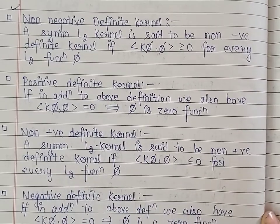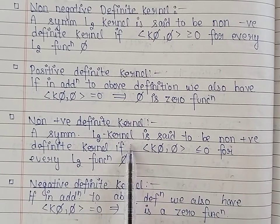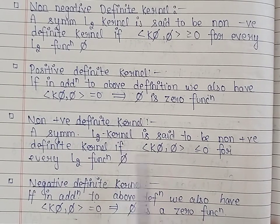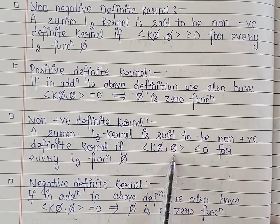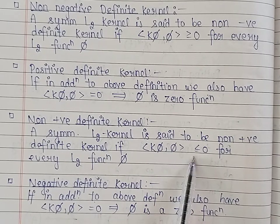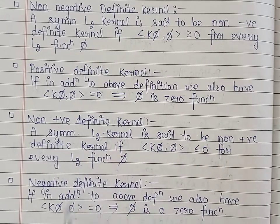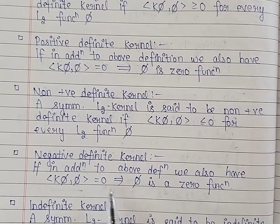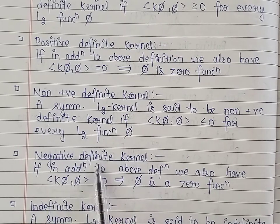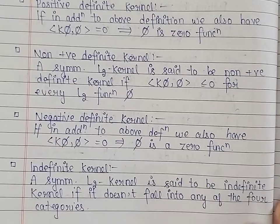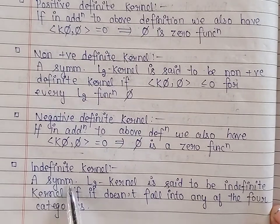A symmetric square integrable kernel K(s,t) is non-positive definite if the inner product of K*phi with phi is less than or equal to 0 for every square integrable function phi. If additionally the inner product of K*phi with phi equals 0 implies phi is the null function, we say the kernel is negative definite. If a symmetric kernel does not fall into any of these four categories, it is called an indefinite kernel.